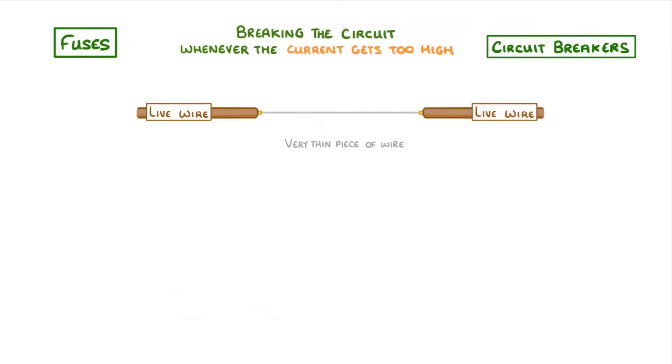Fuses and circuit breakers both act in a pretty similar way, namely by breaking the circuit whenever a current gets too high. A fuse is basically a very thin piece of wire that's connected to the live wire. If there's a surge, a huge amount of current will flow through the live wire and hence through the fuse. This causes the wire of the fuse to heat up really quickly, and because it's so thin, it will melt.